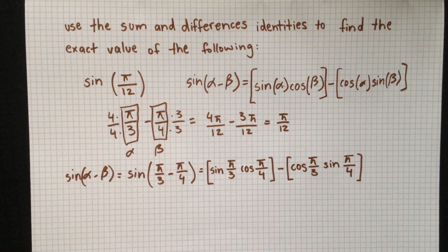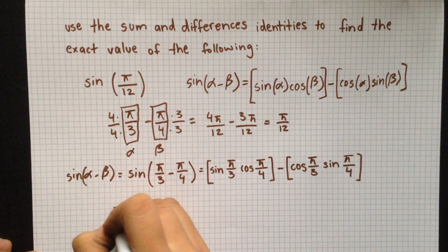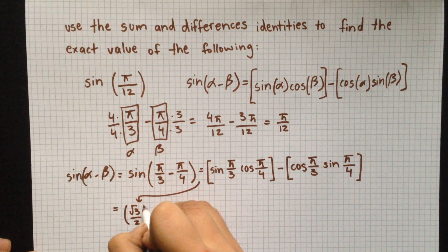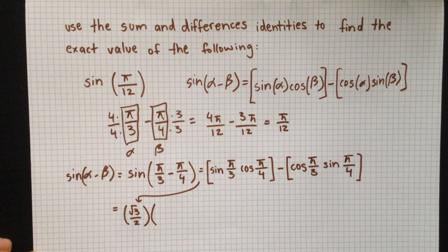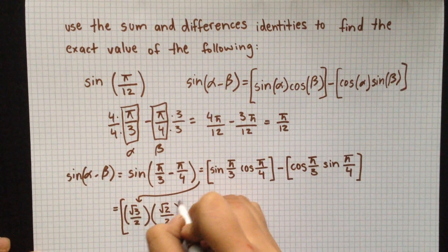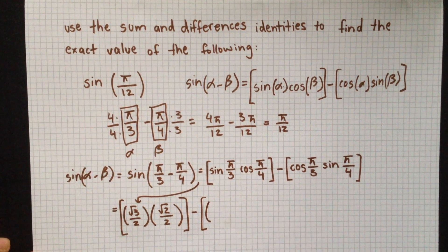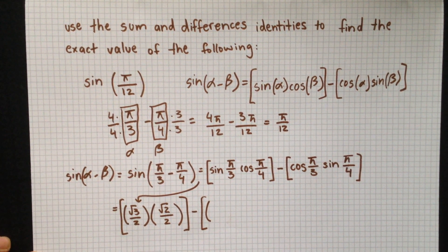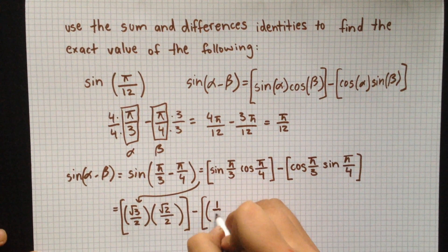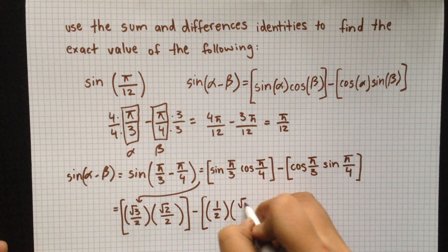Using the unit circle, we find that sine of pi over 3 is radical 3 over 2, and cosine of pi over 4 is radical 2 over 2. For the second term, cosine of pi over 3 is 1 half, and sine of pi over 4 is radical 2 over 2.